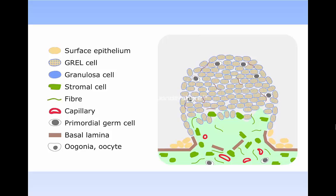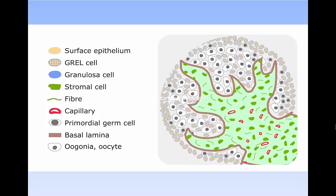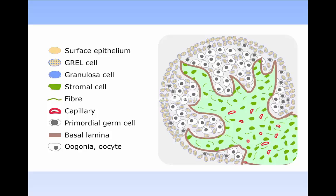Stroma from the mesonephros then penetrates and expands into the primordial ovary. At the leading edge of the stroma is a basal lamina shown in brown. In the stroma are fibroblasts and capillaries, and on the other side of the basal lamina are germ cells, and the only somatic cell type, the GREL cells.